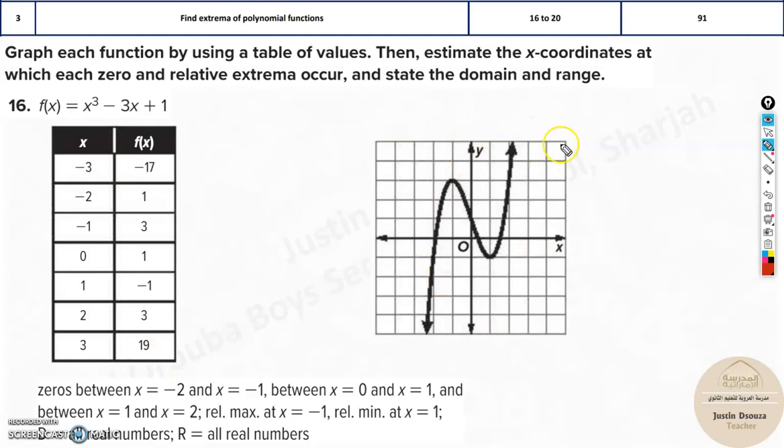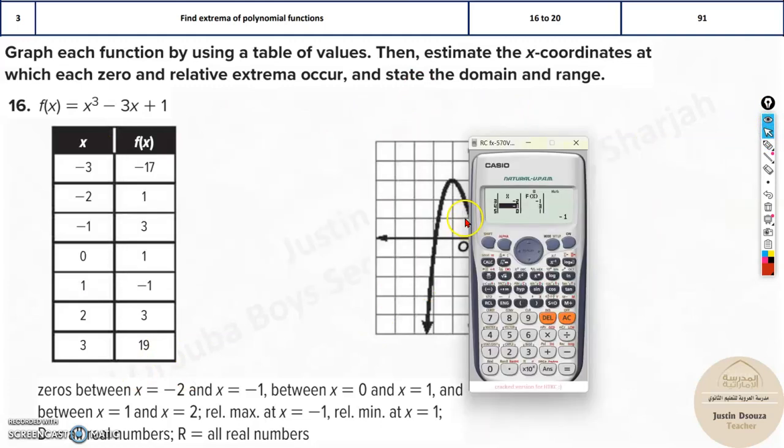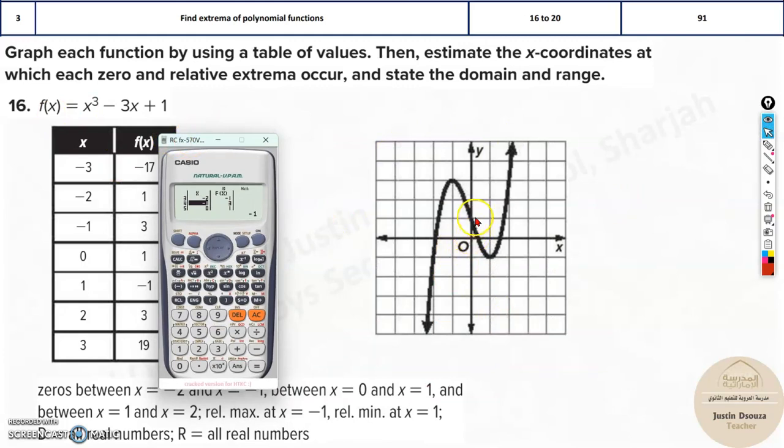There is one more method to check the graph. You can just take any value. I'll choose 0. Once you choose that value as 0, you need to substitute x as 0 in this equation. The answer is 1. So when x is 0, it should be 1. Let me take 1 as x value. 1 cubed minus 3 into 1 plus 1. The answer is minus 1. So at 1, it was minus 1. Absolutely right. When you check 2 or 3 points, you can easily eliminate all the other options and you will be remaining with only one graph.